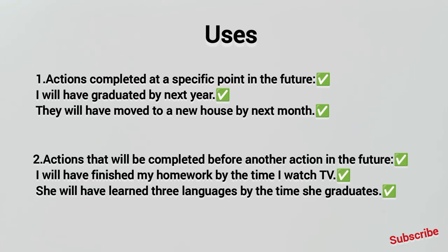The second use is: an action that will be completed before another action in the future. When one action will be completed before another future action, we use the future perfect. For example: 'I will have finished my homework by the time I watch TV.'